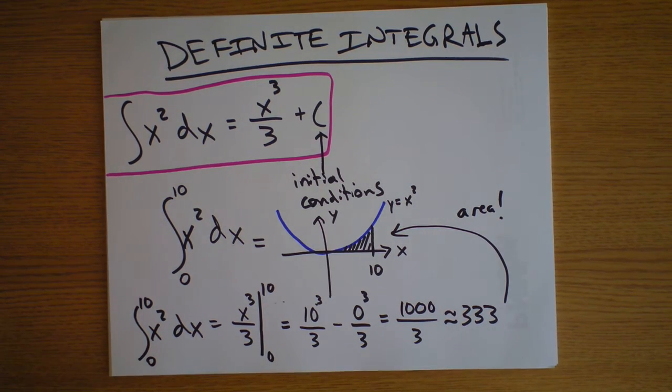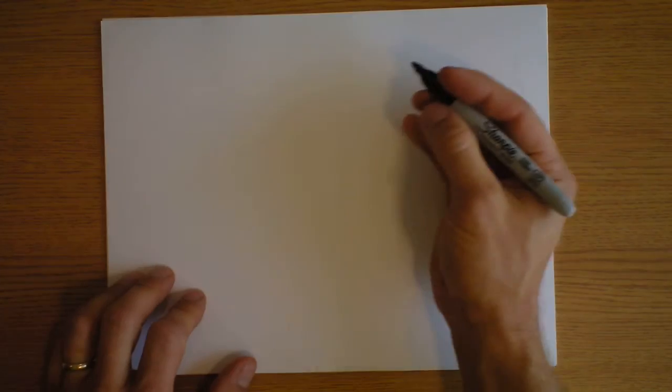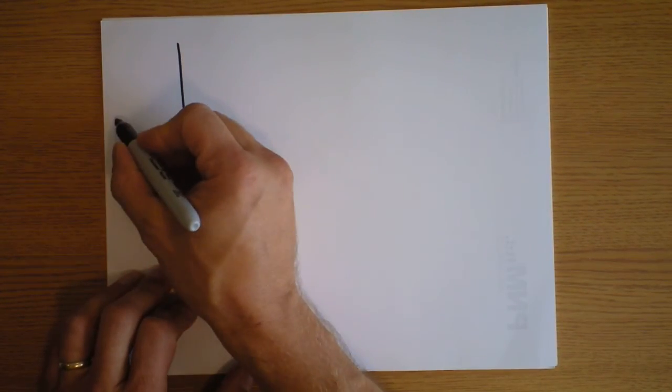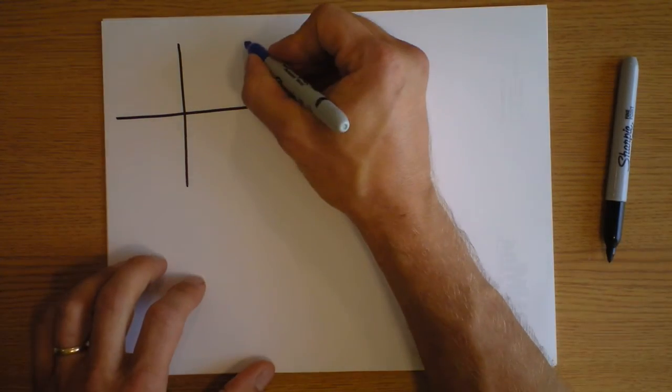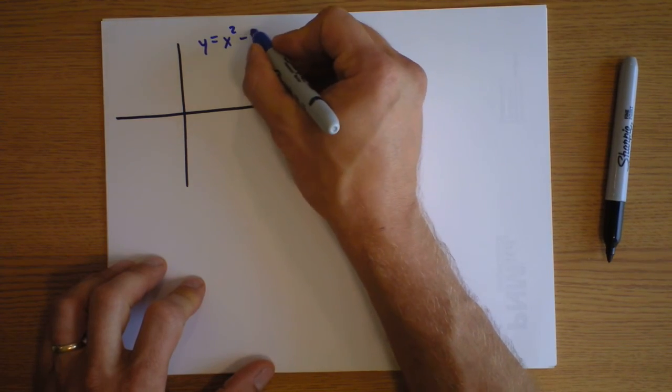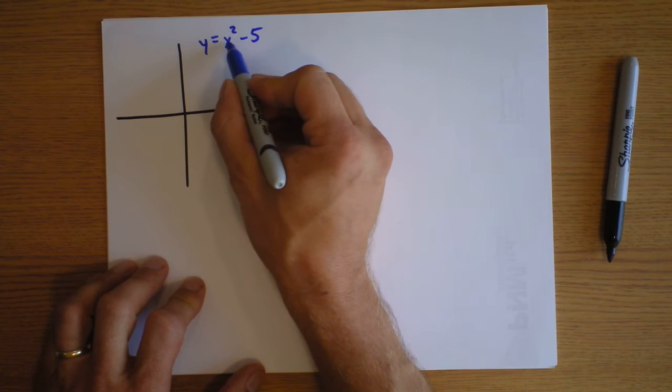And this has all kinds of practical applications. But, for kicks, I will show you something that's a little bit trickier with definite integrals, a little bit trickier of an example. Now, I want to give you the function. This is very interesting. I can give you a very funky function. This function is y equals x² minus 5.